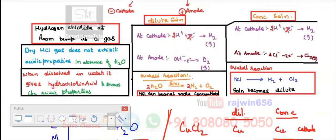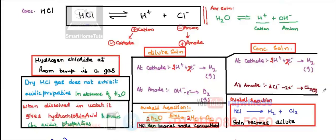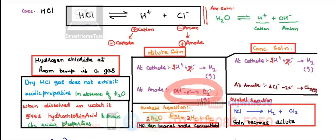A student asks about the anode equation for dilute solution: OH- minus one electron giving O — pointing out it is not balanced. The teacher responds: the balanced equation involves four electrons giving water plus oxygen (2H2O → O2 + 4H+ + 4e-), but at this level you are not expected to answer that balanced equation. Later on you will have to.